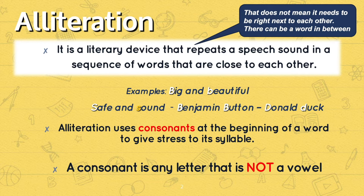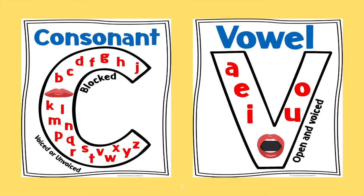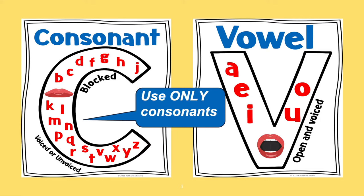Alliteration uses consonants at the beginning of a word to give stress to its syllable. A consonant is any letter that is not a vowel. Consonants include: J, H, G, F, D, C, B, K, L, M, N, P, Q, R, S, T, V, W, X, Y, Z. So use only consonants for alliteration. Vowels are A, E, I, O, U.